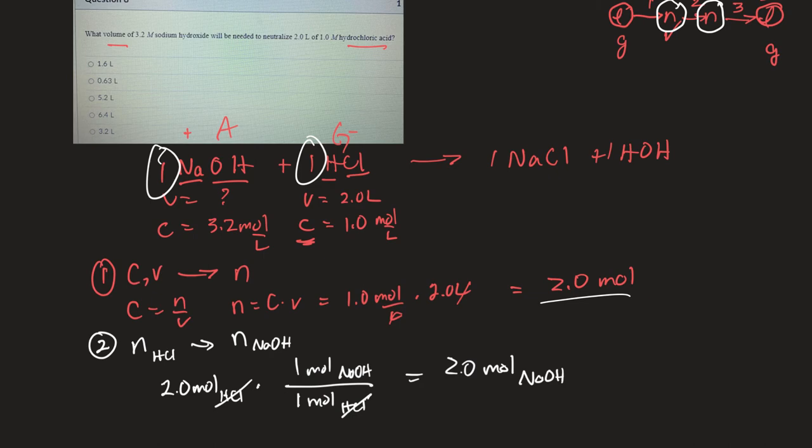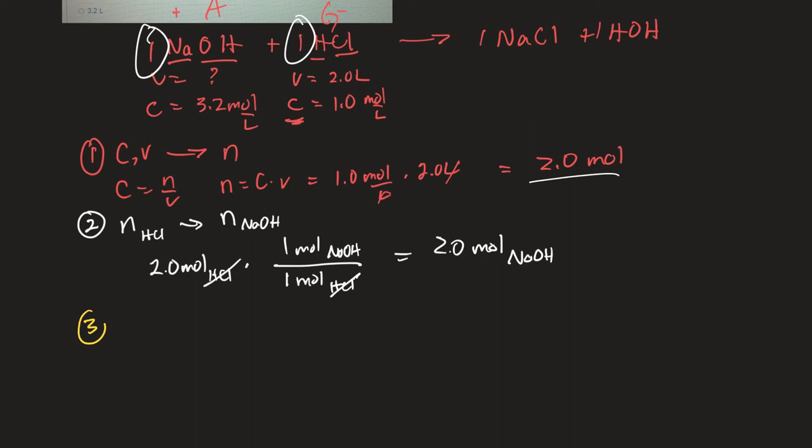So last step is to take those moles and the concentration and figure out volume. So step 3 is to take the concentration, which is given, and the number of moles, which I just got here, and from those get my volume of sodium hydroxide. Formula, C equals N over V. They're looking for V.